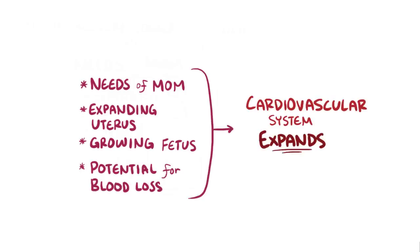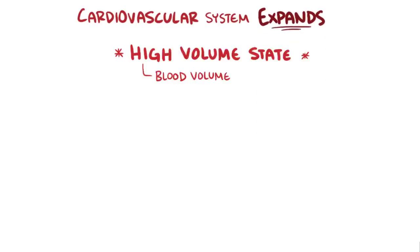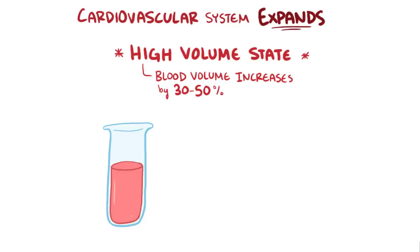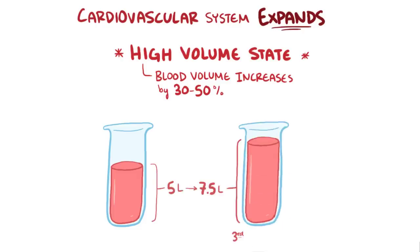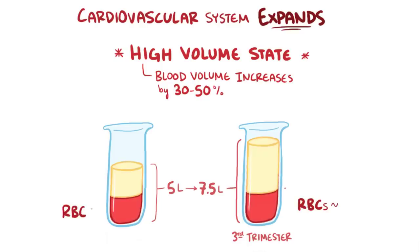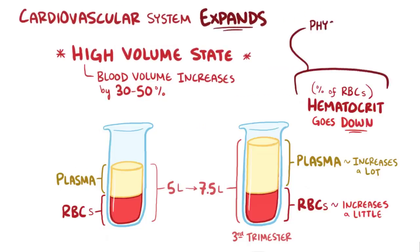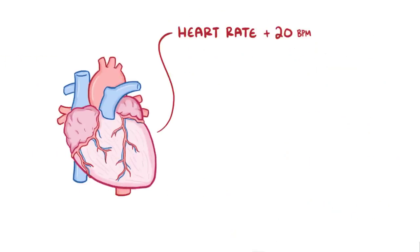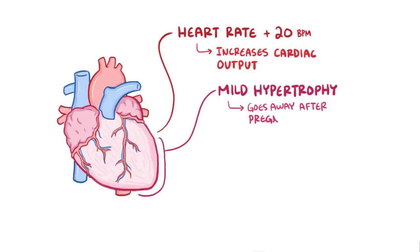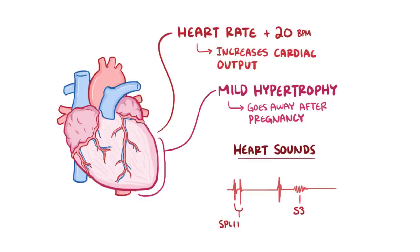To accommodate the needs of the mother, an enlarging uterus, a growing fetus, and to have some reserve for blood loss during delivery, the cardiovascular system has to expand. Pregnancy is called a high-volume state because the circulating blood volume increases by thirty to fifty percent, meaning an average woman will go from five liters to about seven-and-a-half liters of blood by the third trimester. The number of red blood cells increases a bit, but there's a much larger increase in plasma volume, so the hematocrit actually goes down — this is called physiological anemia of pregnancy. To push this extra blood around, the heart rate goes up by about twenty beats per minute, increasing cardiac output. In response to the increased workload, there is mild hypertrophy of the heart, which does go away after pregnancy. The high-volume state also explains why there's sometimes a third heart sound, or physiologic S3, as well as a split S1, where the mitral valve closes slightly faster than the tricuspid valve.